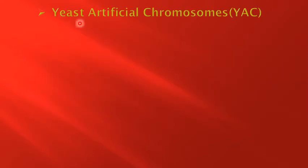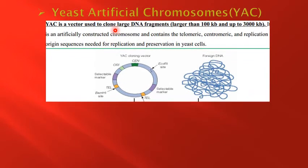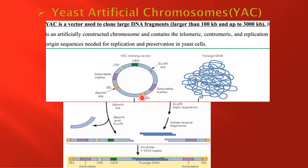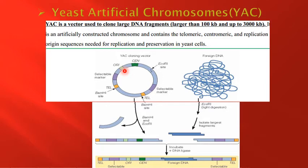The last type is called the yeast artificial chromosome (YAC) vector, used to clone large DNA fragments larger than 100 KBs and up to 3000 KBs. It is an artificially constructed chromosome containing a centromere, telomere, and origin of replication needed for replication and preservation in yeast cells.